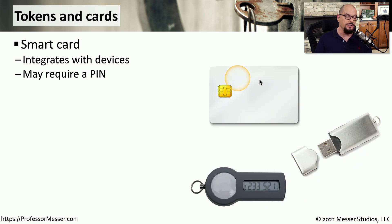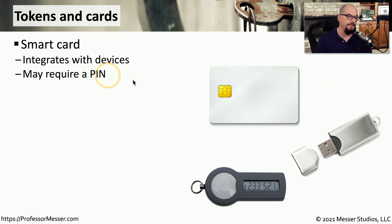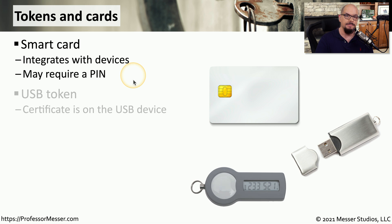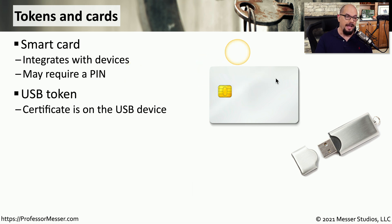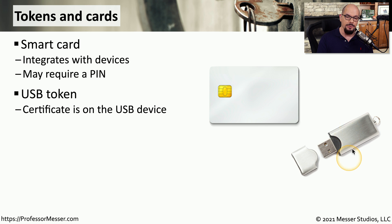We can also put these certificates onto smart cards that can double as identification cards. We slide the card into the device we're using to provide authentication, and we usually also provide a personal identification number. If the device doesn't have a smart card reader, we might use a USB key and put the certificate on the USB drive itself. During authentication, the USB key is plugged in, the certificate is read, and it usually works in conjunction with a personal identification number.